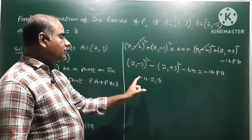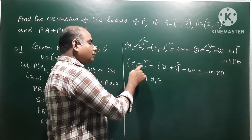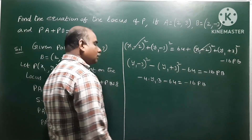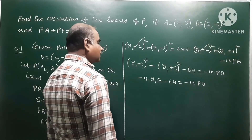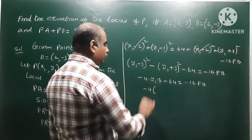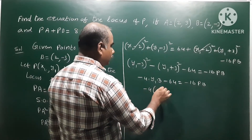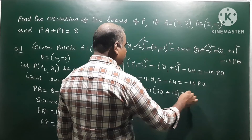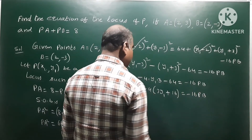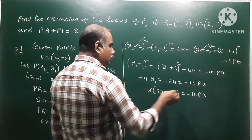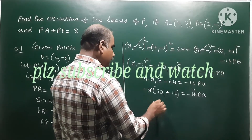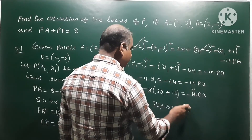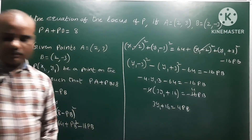Using the formula, minus 4ab with a as y1 and b as 3 gives minus 64 equals minus 16 PB. Cancelling the 4, we get minus 4 equals 3y1 minus 4, and after rearranging, 3y1 plus 16 equals 4 PB. Now we have to calculate further.